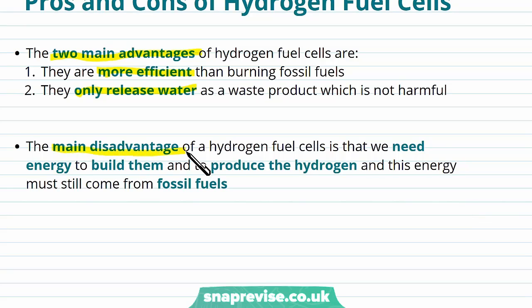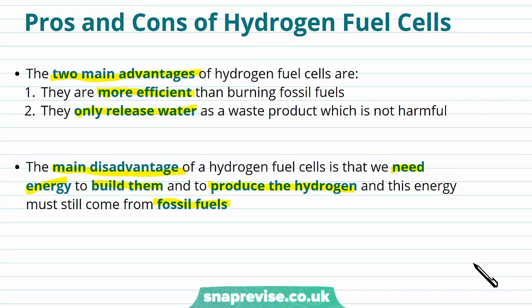The main disadvantage or drawback of hydrogen fuel cells, is that we need energy to build them, and energy is also required to produce the hydrogen that they use as fuel. This energy has to come from somewhere, and it still comes from fossil fuels. So hydrogen fuel cells are not as environmentally friendly, as they appear at first sight.